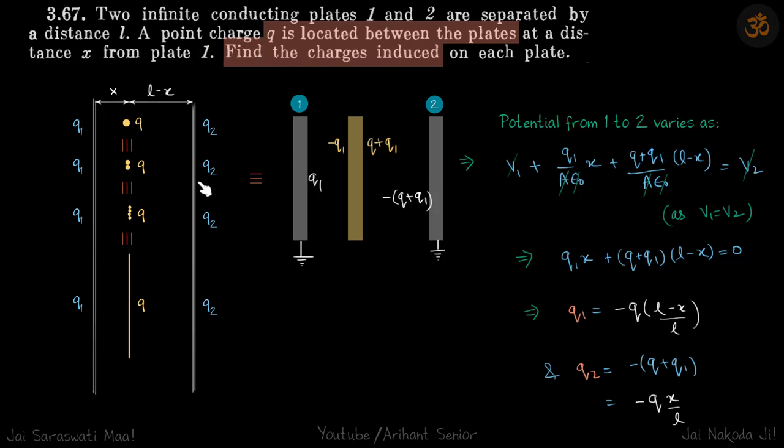We have two infinite conducting plates and a charge Q is located between the plates at a certain distance x from one plate, so the other distance is L minus x. We need to find the charges induced on each of the plates.